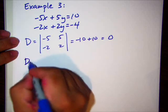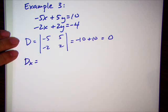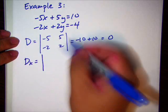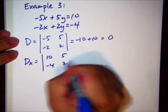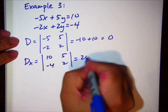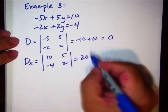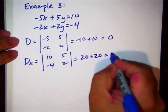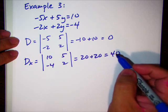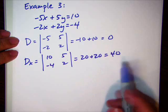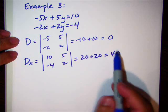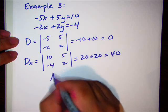Let's find dx. If dx is not 0, if dx is not 0, then it will be no solution. Let's find out. Replace the x column with the constant column. Y column. 20 minus a negative 20. So, that's 20 plus 20. It's 40. Okay. It's not 0. 40 over 0 is undefined. I understand 0 over 0 is undefined, but this is definitely undefined. 40 over 0 is undefined. We say this has no solutions.